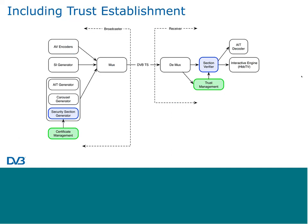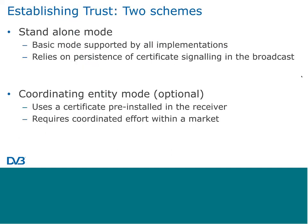There are two modes. The basic mode — called standalone — has no administrative overhead. It's designed so that all receivers and all broadcasts support it, and relies simply on the receiver observing the persistence of the certificate in the broadcast. There is an optional mode which uses a certificate preinstalled in the receiver. This requires cooperation between market stakeholders to make it work, which is why it's optional — not all markets will be able to do that.